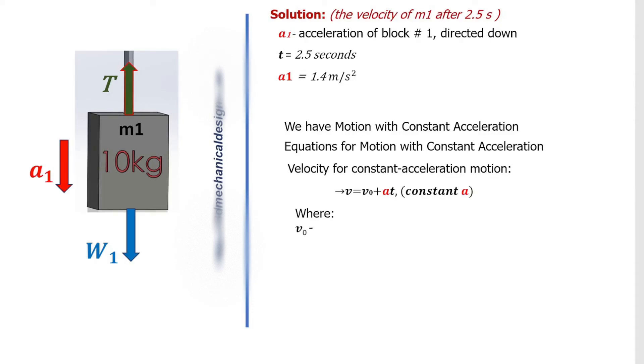Where V0 is Initial Velocity, V0 equals 0 meters per second. A is Acceleration, A equals 1.4 meters per second squared. T is Time Over Which the Motion Occurred, T equals 2.5 seconds.